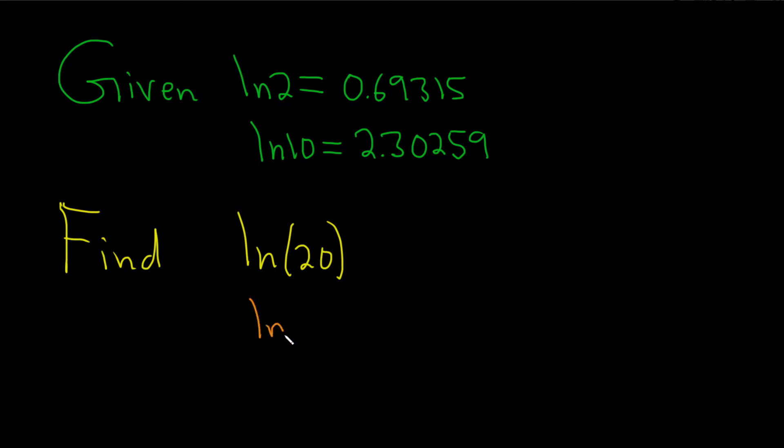Notice that the natural log of 20 is really the natural log of 2 times 10, because 2 times 10 is 20. Now recall that whenever you have the natural log of, say, x times y, this is actually just the natural log of x plus the natural log of y.